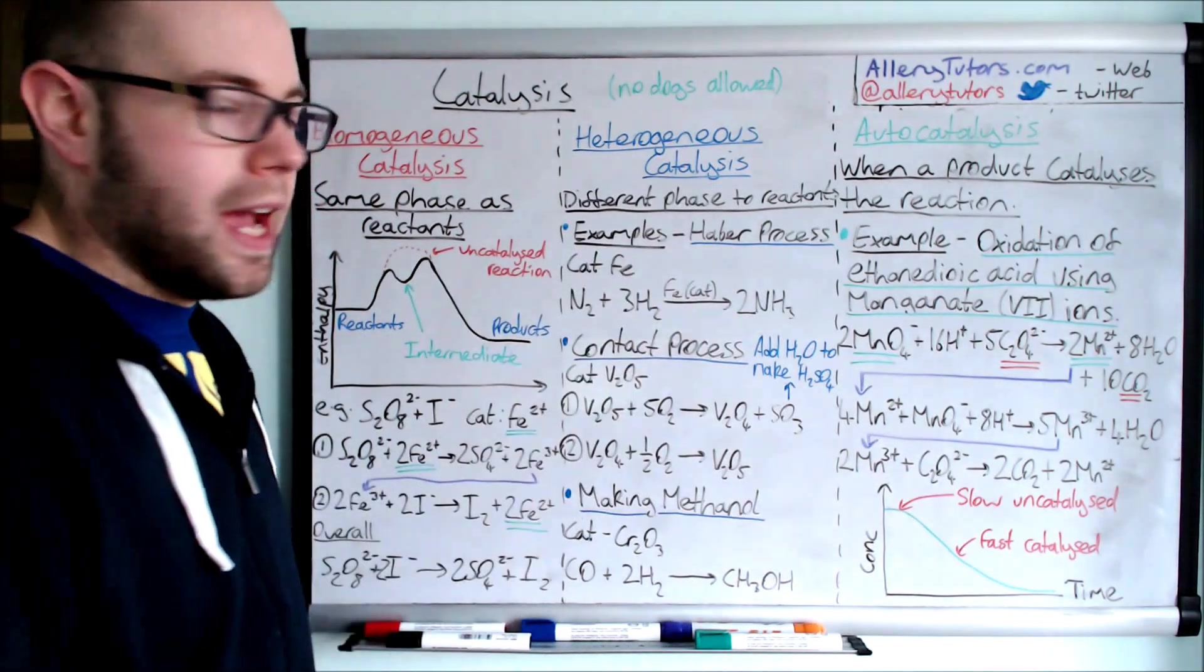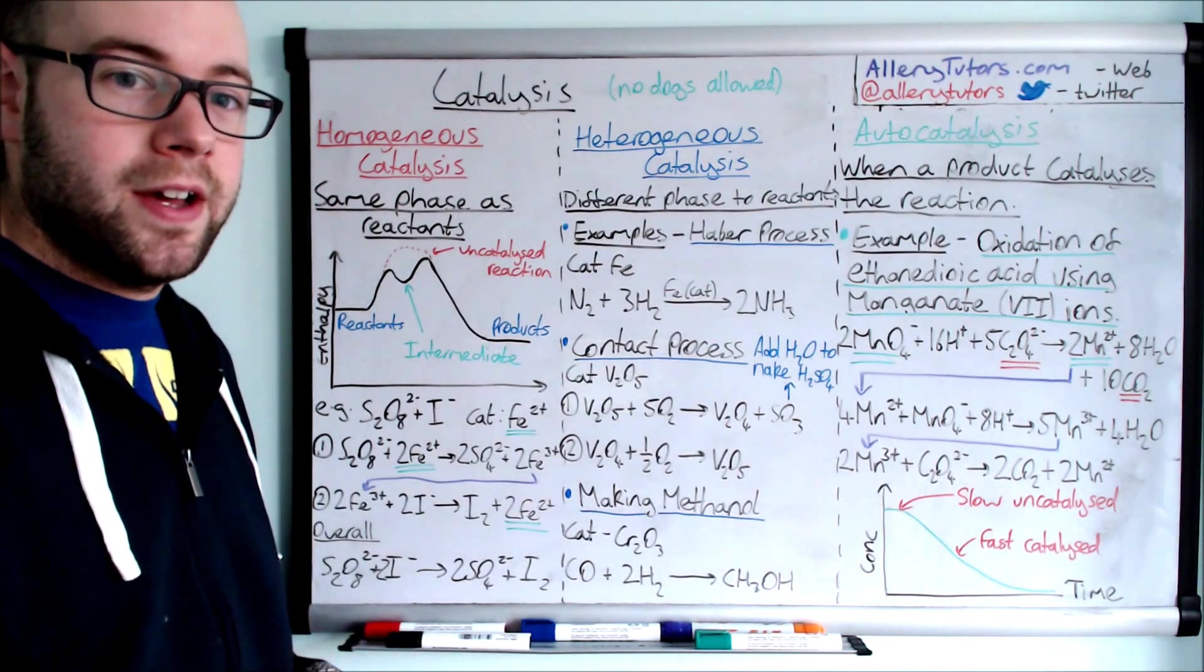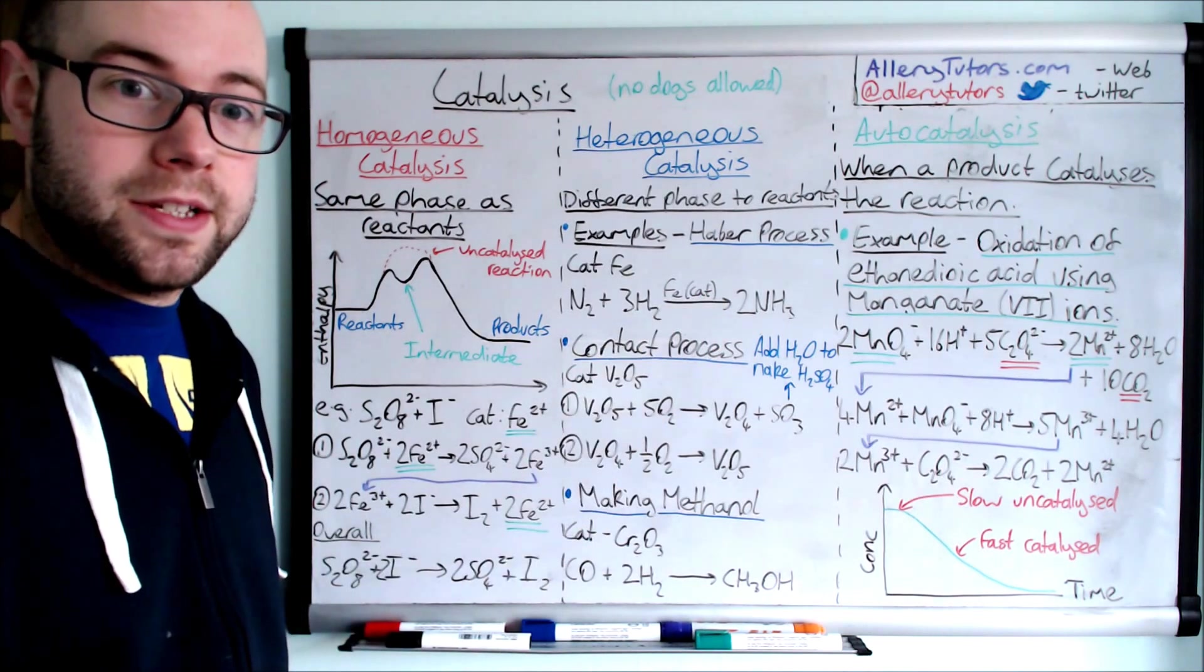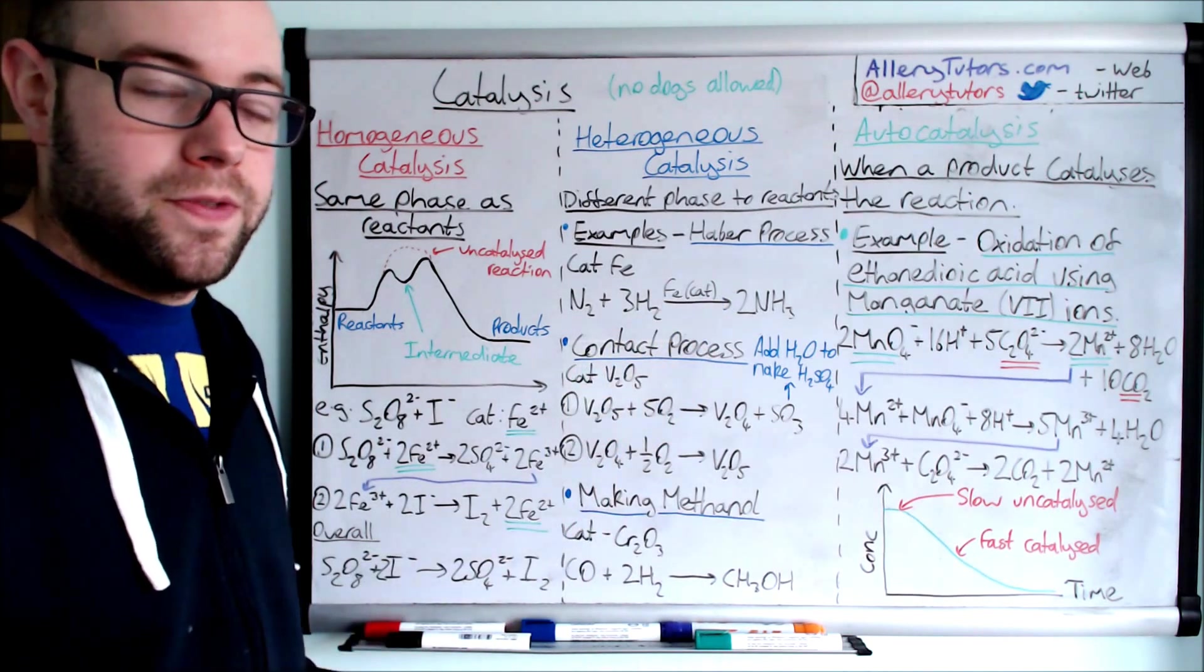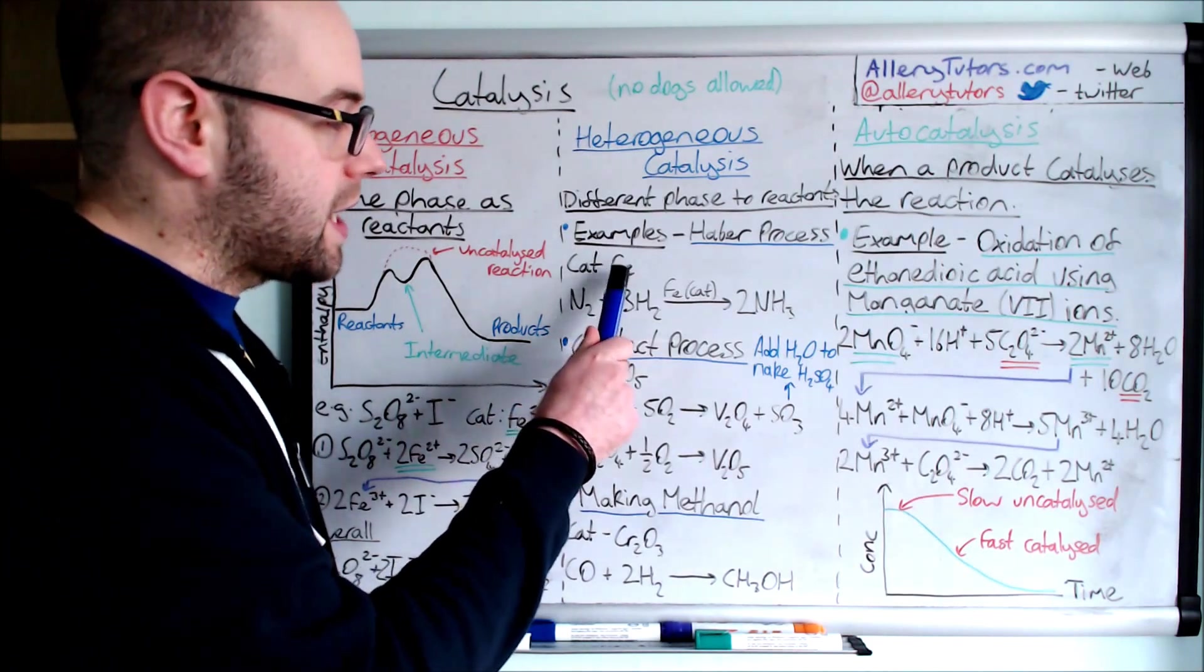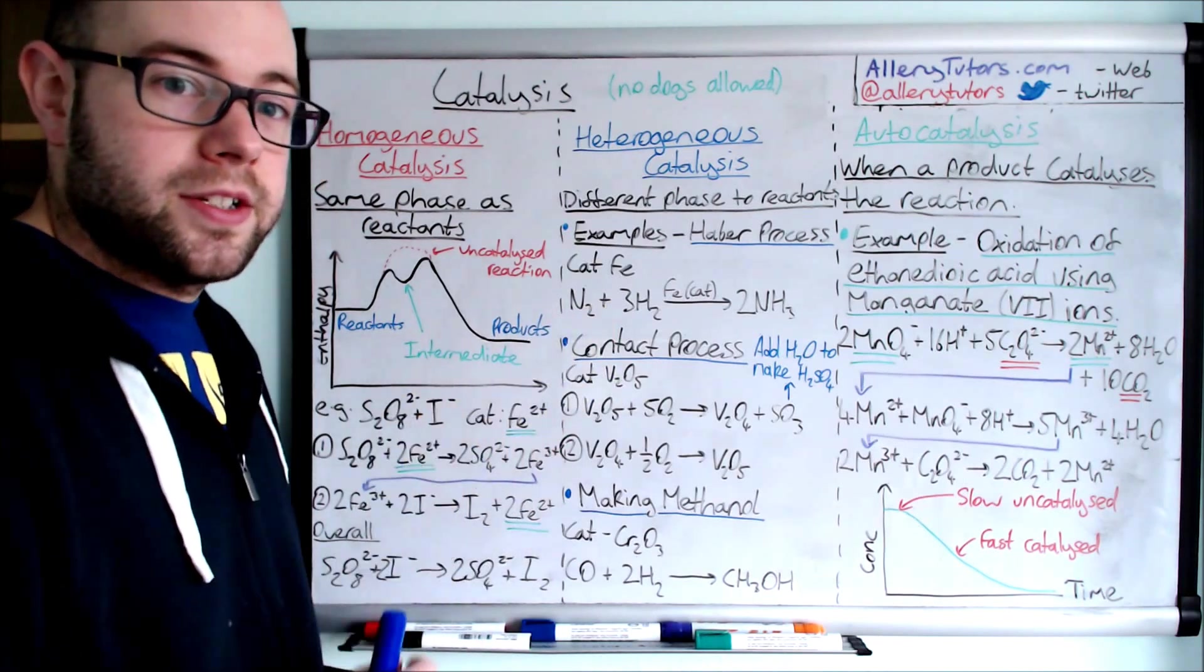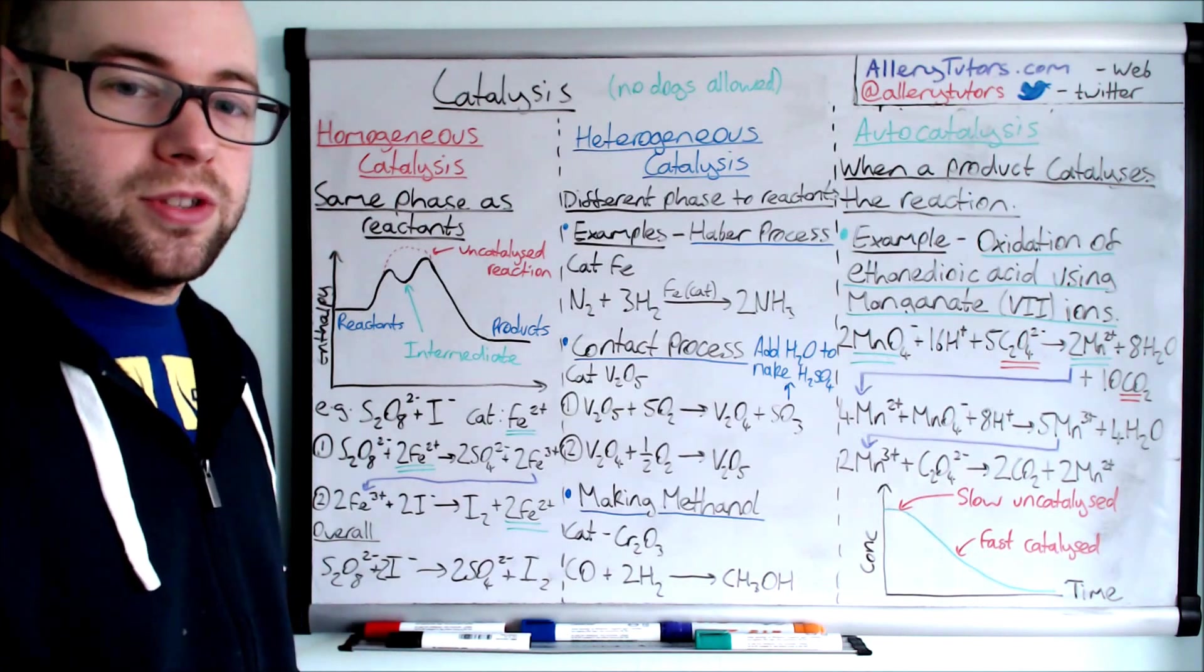We're going to look at the Haber process and in my opinion this is one of the most important reactions ever discovered. It's mainly used for fertilizers on crops. Without that we wouldn't be able to produce the volumes of food that we can produce today. This uses a catalyst which is iron. We have two gases, nitrogen and hydrogen. The iron is obviously solid, so this is a heterogeneous catalyst. And we'll form ammonia which is 2NH3.